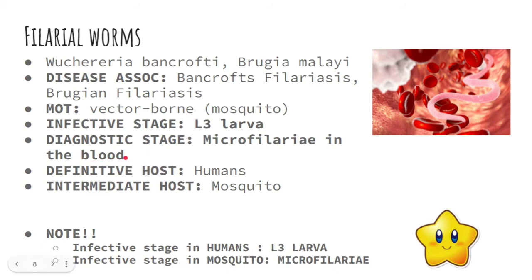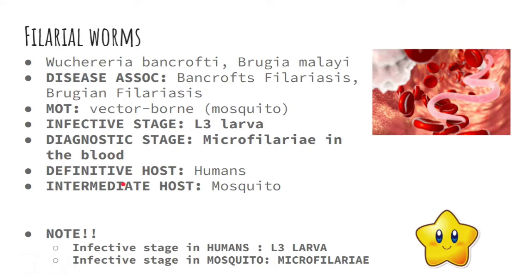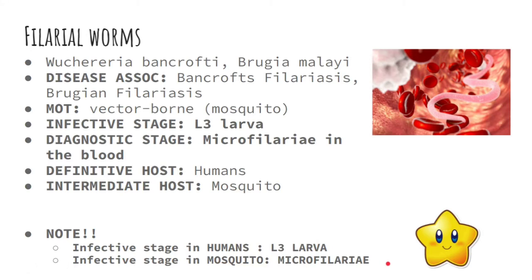The diagnostic stage of this parasite — the stage we can see in the laboratory — is the microfilariae in the blood. Note that the infective stage and diagnostic stage of filarial worms are different. The definitive host is humans, where the parasite reaches full maturity as adults. The intermediate host is the mosquito, where the parasite exists only in larval or asexual stages and is not yet fully developed.